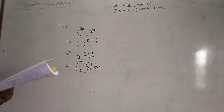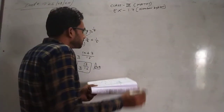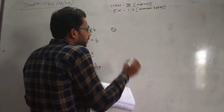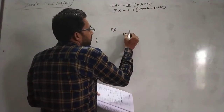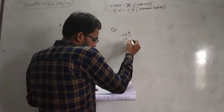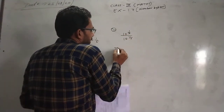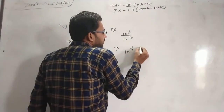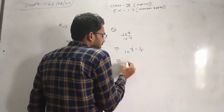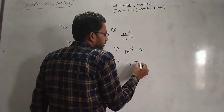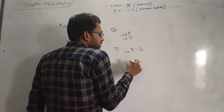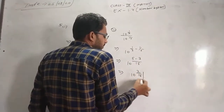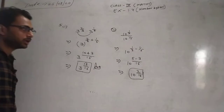The next question is simple — we will do it. The second question: 10 to power 1 by 2, multiplied by 10 to power 1 by 5. So the powers will be added: 1 by 2 plus 1 by 5. The LCM of 2 and 5 is 10, giving us 5 upon 10 plus 2 upon 10. So this will be 10 to power 7 upon 10.